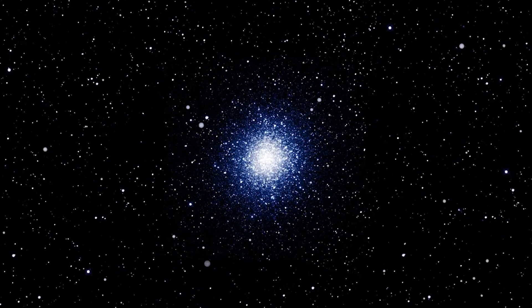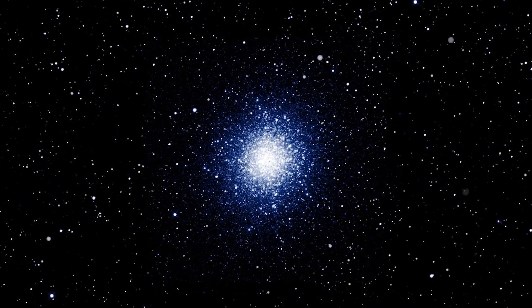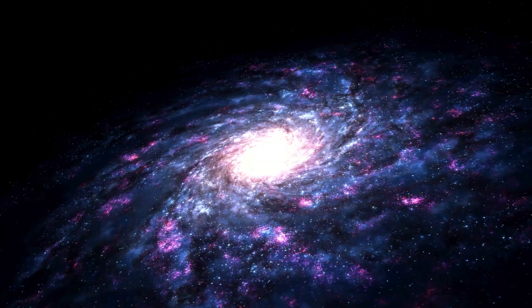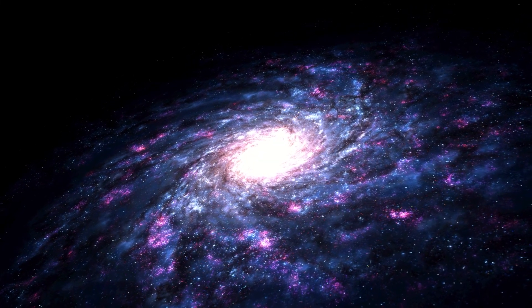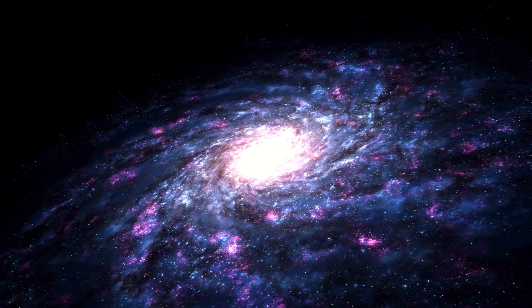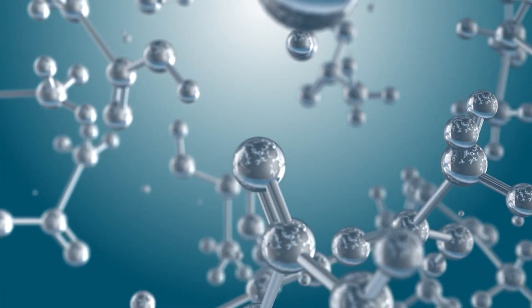In other words, general relativity describes how everything in the universe interacts on a grand scale, from the orbit of planets to the formation of galaxies. But as powerful as it is, general relativity only really works with large objects. When we try to apply it to the smallest particles, things get messy.